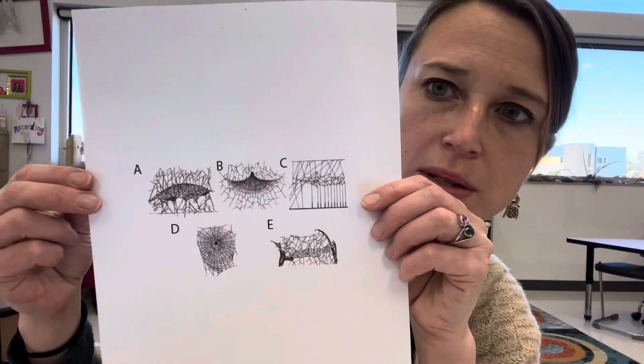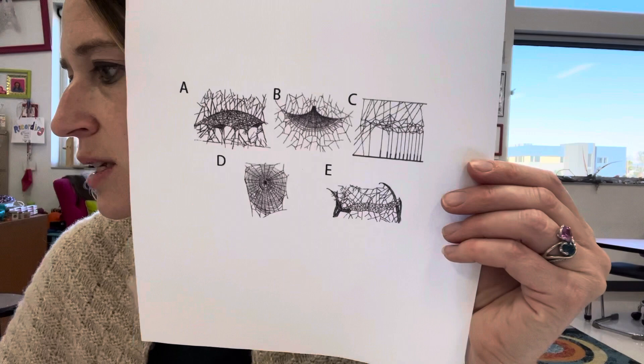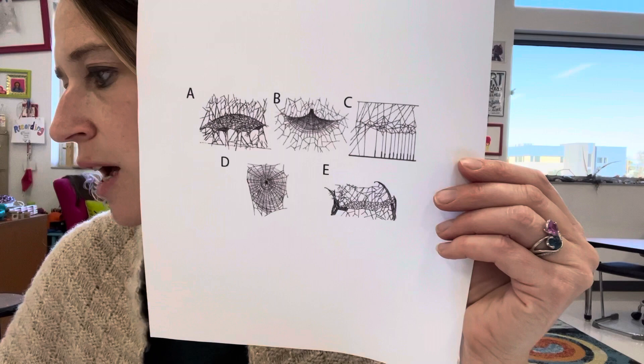Alright, so there are actually lots of different types of spider webs. So I actually looked up different types, and some of the different types that there are are sheet webs, cob, tangle webs, woolly webs, funnel webs, and orb webs.